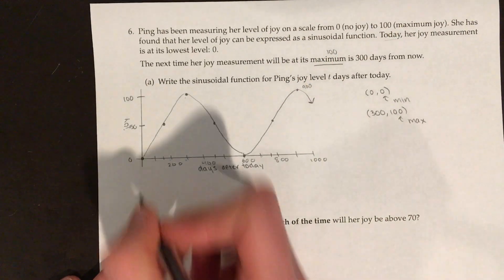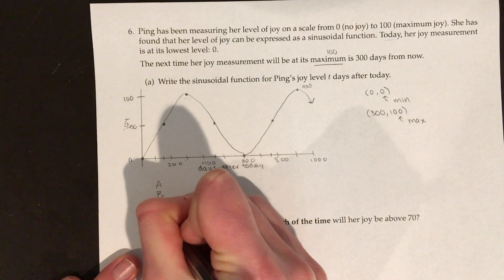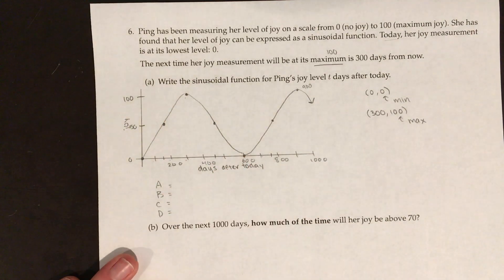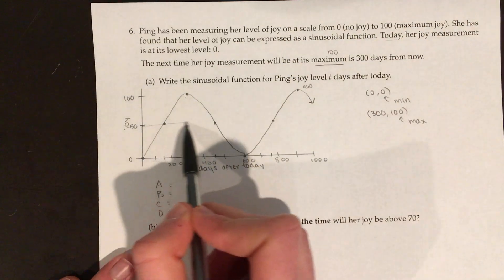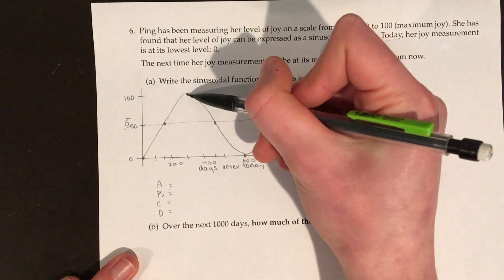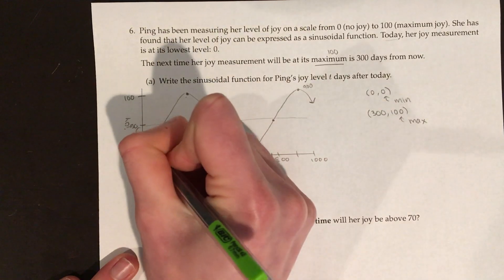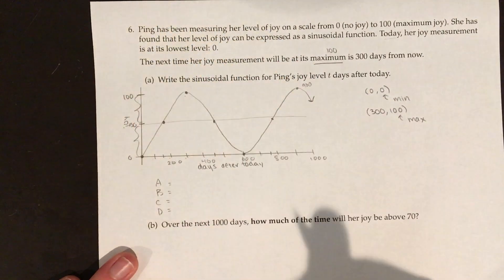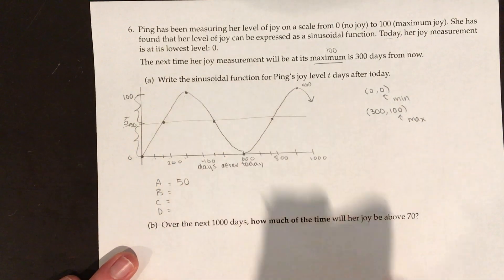Now I can identify A, B, C, and D for my equation. A is the amplitude — that's how far you go from the middle of your graph, or the mean, to your max, or the mean to your min. In either case, it's going to be 50. Amplitude is 50.